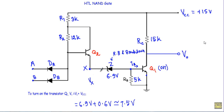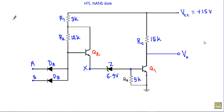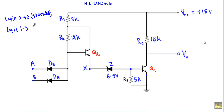If the voltage between this terminal and this terminal is less than 7.5V, transistor Q1 will be in OFF state. If the voltage difference is equal to or greater than 7.5V, transistor Q1 will be in ON state. In an HTL logic gate, any voltage less than 1V will be treated as logic 0, so for logic 0 I will apply 0V — the input terminal is connected to ground. Any voltage greater than 3V will be treated as logic 1, so for logic 1 I will apply 15V.